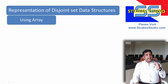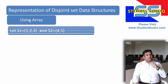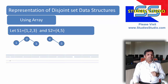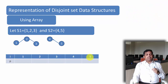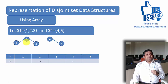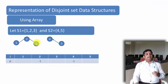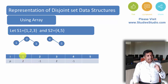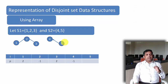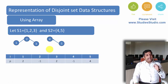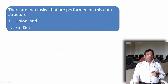Let us see how to use an array to represent a disjoint set data structure. Taking the same sets S1 and S2: I will write all the elements and a pointer field. Whoever is the representative, I will mark them with minus 1. In S1, 2 is the representative, so I mark minus 1 there. In S2, 4 is the representative, so I mark minus 1 there. For element 1, the representative is 2; for element 3, the representative is 2, so I write 2 and 2. Similarly, 4 is the representative of 5, so under 5 I write 4. This is how an array can be used to represent a disjoint set data structure.